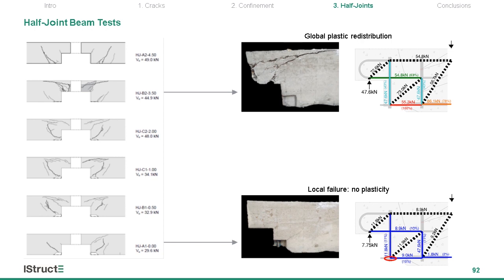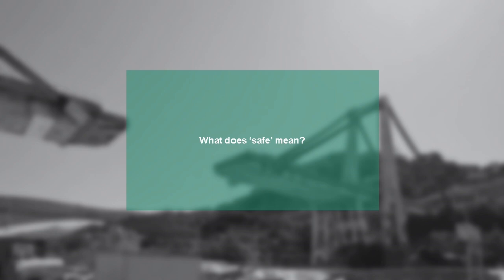In the event of a local failure due to local damage, plastic redistribution would not be possible. This undermines the assumptions behind plasticity-based models currently in use, explaining their deviation from experimental results and their unreasonable level of conservatism. A more general question is raised: what does 'safe' mean, and can we really use plasticity-based models to assess structures where deterioration leads to local failure with no redistribution?